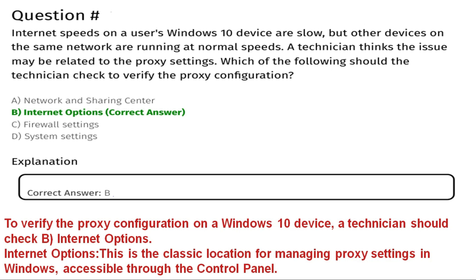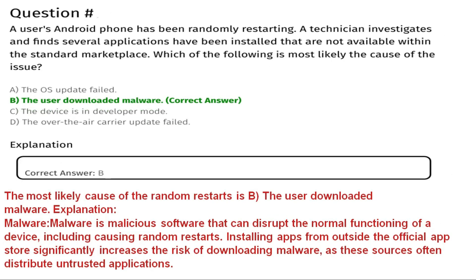Next question: A user's Android phone has been randomly restarting. A technician investigates and finds several applications have been installed that are not available within the standard marketplace. Which of the following is most likely the cause of the issue? Option A is the OS update failed, Option B is the user downloaded malware.